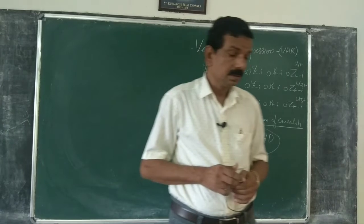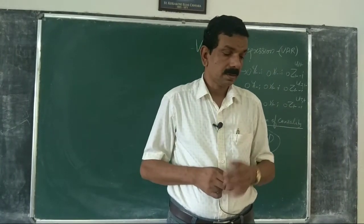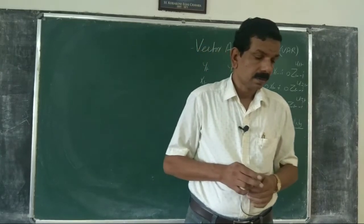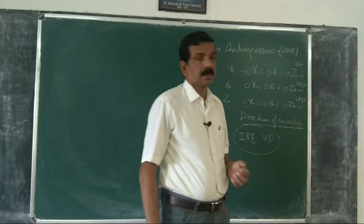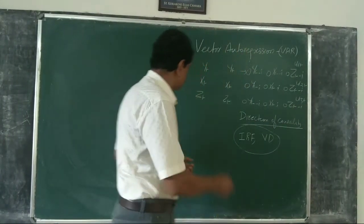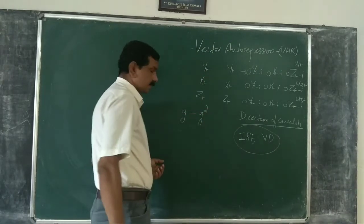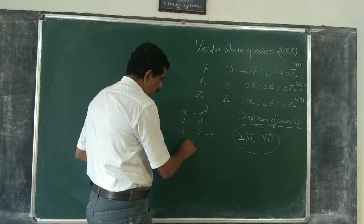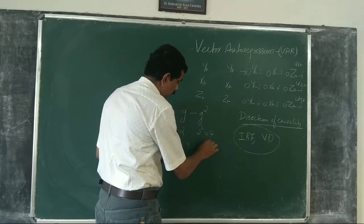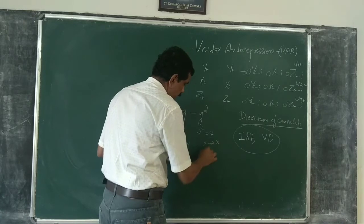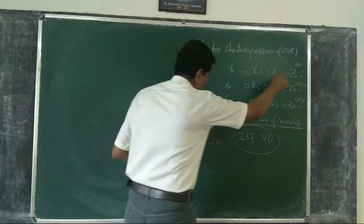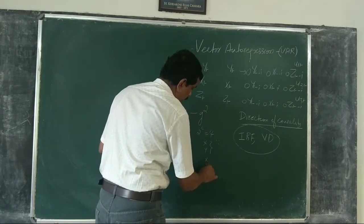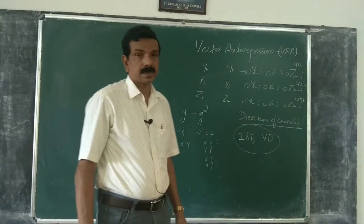That is what impulse response function traces out: if a unit shock is applied to the error term, its effect over time is considered. And if there are g variables, there will be g squared impulse responses. If there are two variables, then two squared — that is four — impulse responses. For example, if x and y are the variables, we get the impulse response of u1 on x, u1 on y, u2 on x, and u2 on y — four impulse responses.